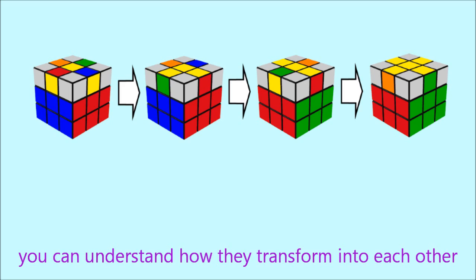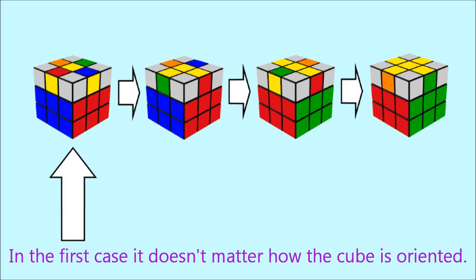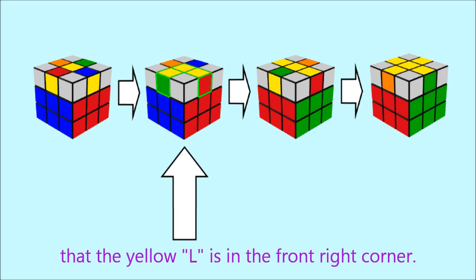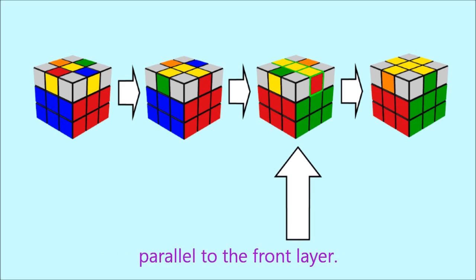You can understand how the states transform into each other by choosing the right starting orientation of the cube. In the first case, it doesn't matter how the cube is oriented. In the second case, hold the cube so that the yellow L is in the front right corner. The yellow line in the third case must be parallel to the front layer.